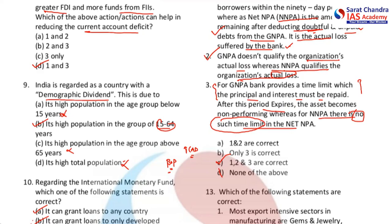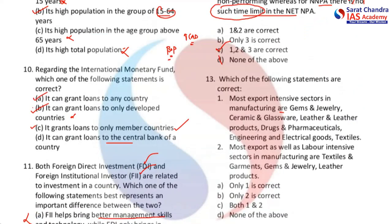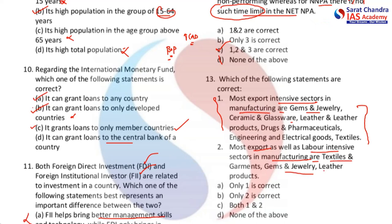Next question: which of the following statements are correct? First: most export-intensive sectors in manufacturing are gems and jewelry, ceramic and glassware, leather and leather products, drugs and pharmaceuticals, engineering and electric goods, and textiles. Second: most export as well as labor-intensive sectors in manufacturing are textiles and garments, gems and jewelry, and leather products. We have to examine whether these statements are correct.